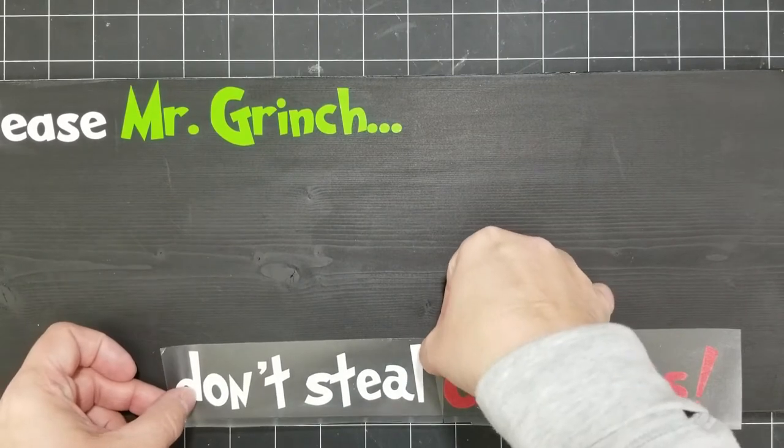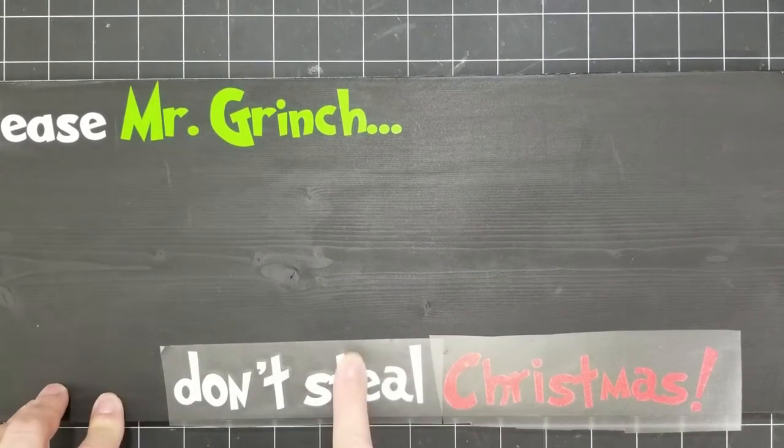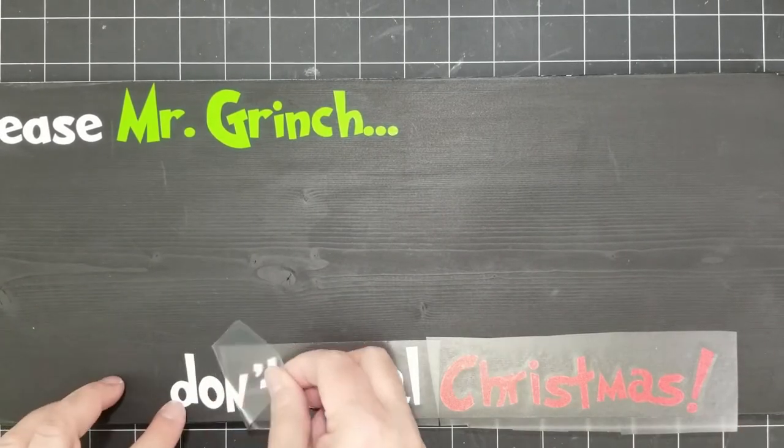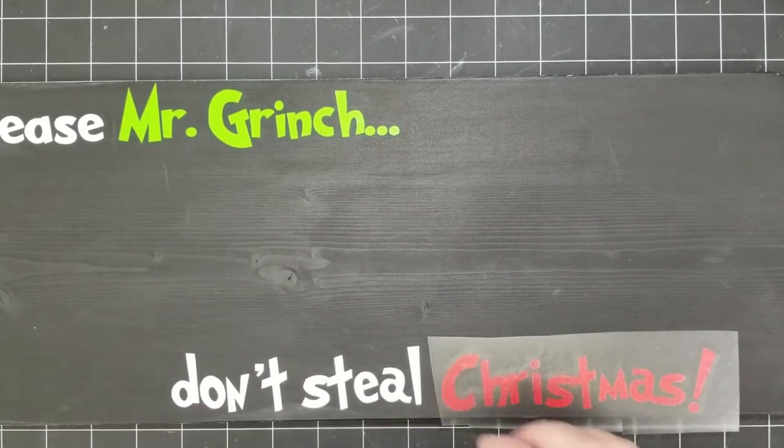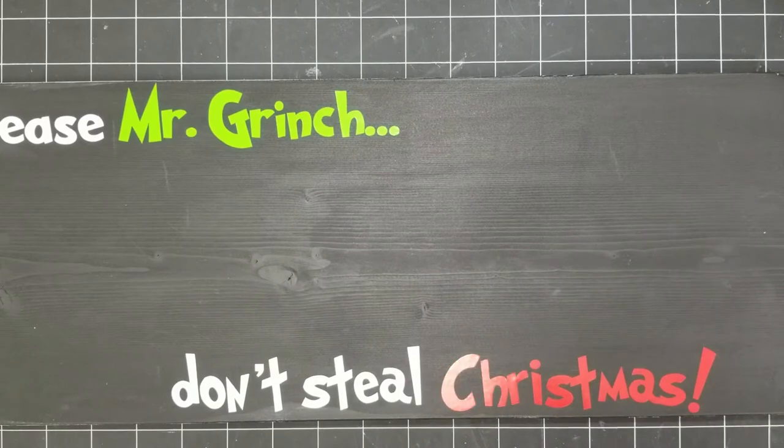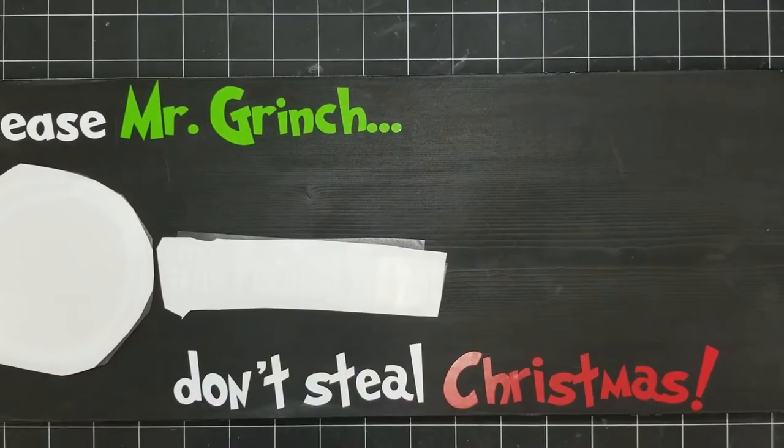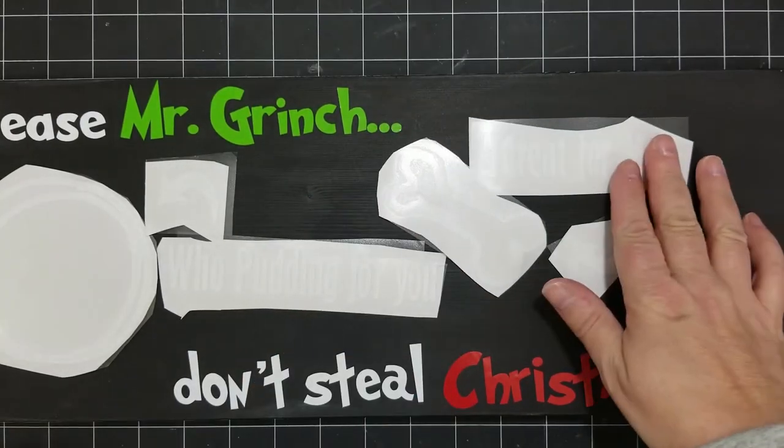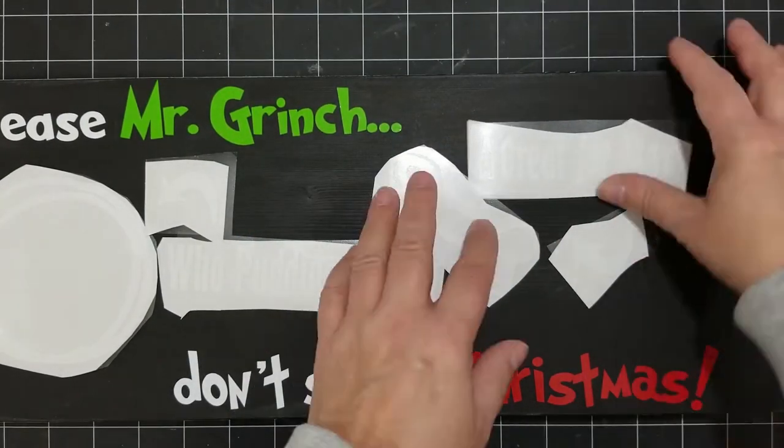And of course you can put anything on these trays. They're so fun if you just have some scrap wood which is what I had. And the vinyl I'm using is from Style Tech Craft. It's my favorite vinyl. I'm using a matte white and then I have glossy for the green and the red.